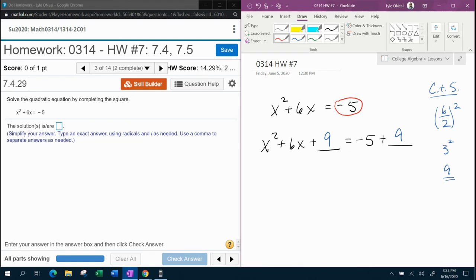Now, why do we call it completing the square? Well, it turns out that the trinomial that you create is what we call a perfect square trinomial. That means that when you factor it, the factors will be identical.